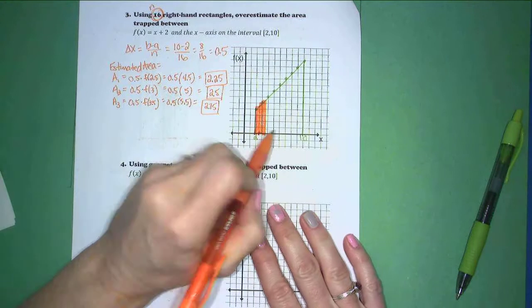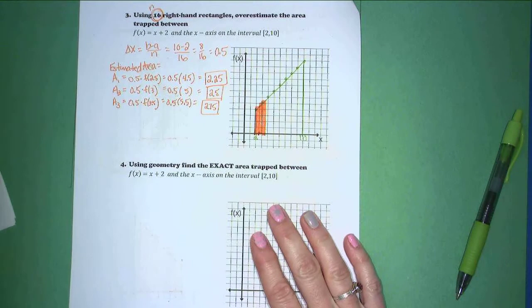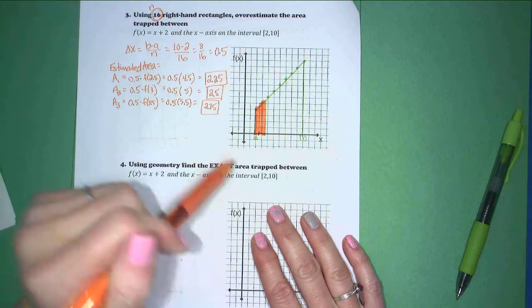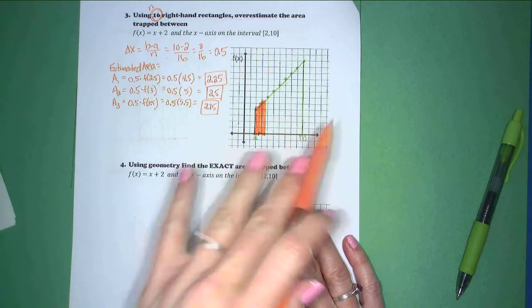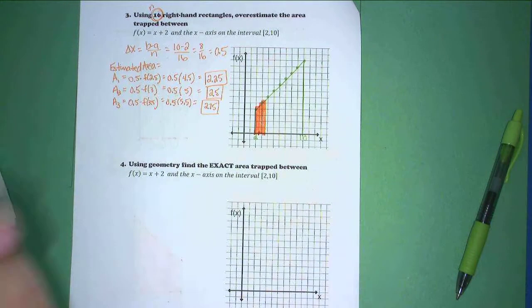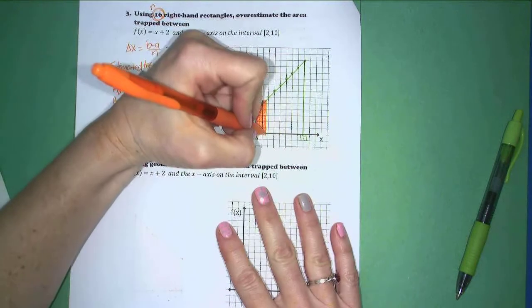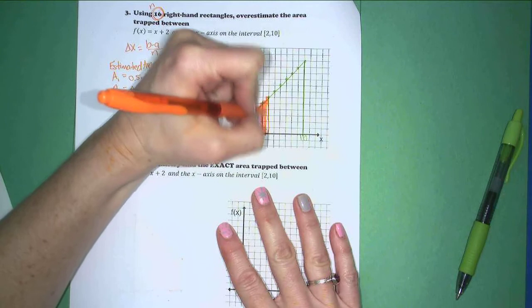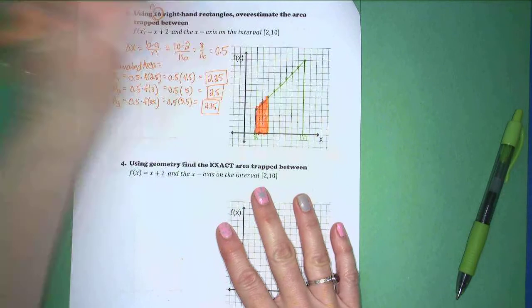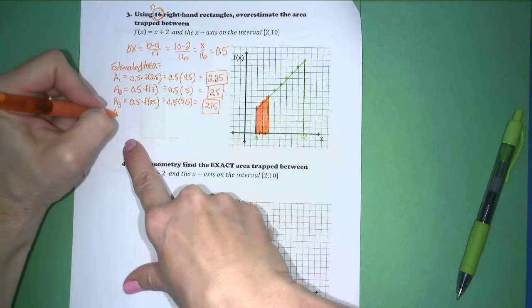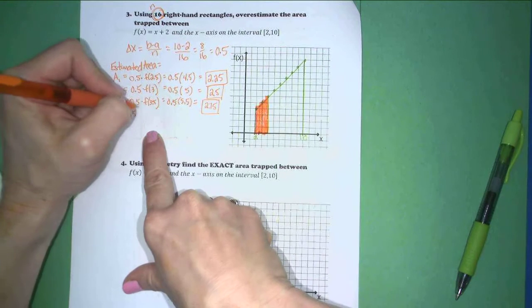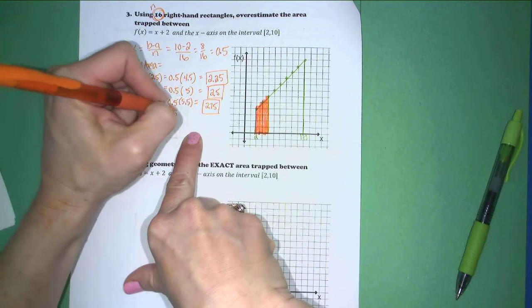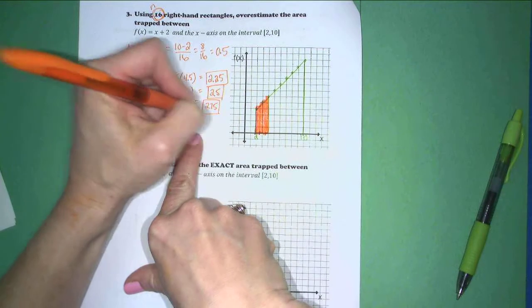Feel free to pause this video and then fast forward. If you don't want to watch every nook and cranny of what I'm doing here, you can always pause it, do it yourself, fast forward, see if we match. Just going to keep on going like this. Next rectangle. My rectangle 4. Area 4. 0.5 times f of 4. Should be 0.5 times 6, which is 3.